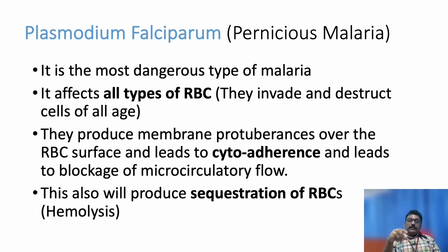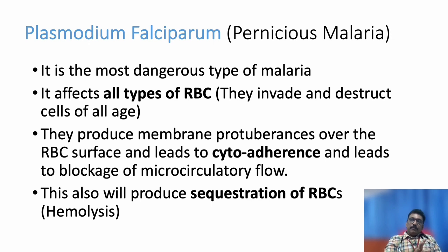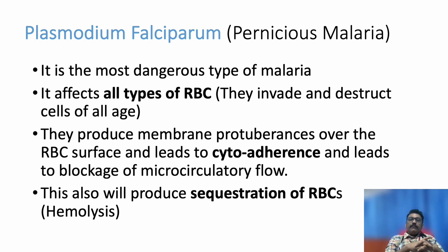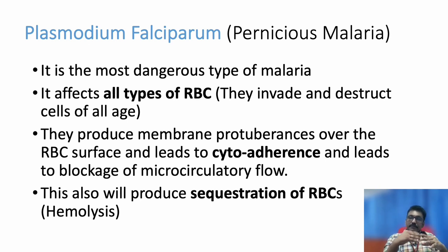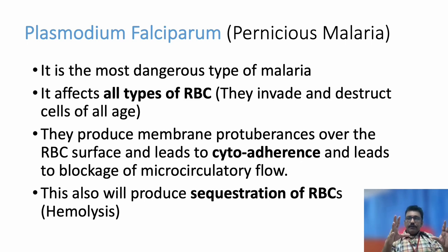Plasmodium falciparum, otherwise known as pernicious malaria, has two important problems. First, it affects all types of RBCs — that is very important. Some malaria like vivax only affects particular types of RBCs, but falciparum affects younger RBCs, elderly RBCs, and even the production site itself. So falciparum malaria involves all age groups of RBCs, making the symptoms very severe and more extensive than vivax malaria.